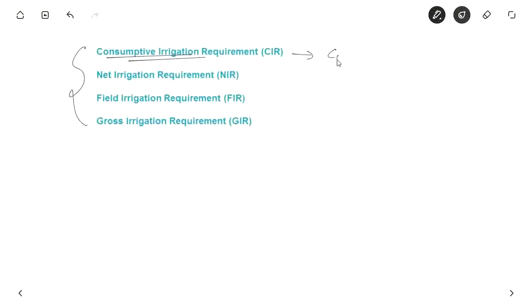So it is consumptive use minus effective rainfall, as rainfall provides some of the water. What is left out is provided by irrigation. Net irrigation requirement (NIR) is consumptive irrigation requirement plus the losses due to leaching and percolation like water seepage.